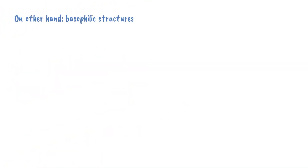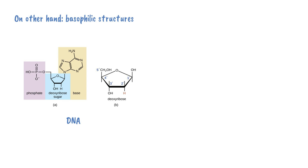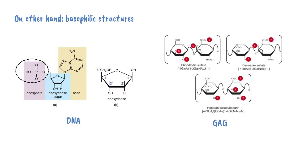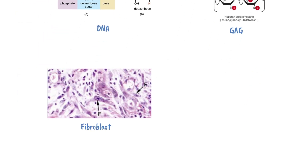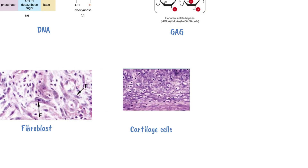On the other hand, acidic negatively charged structures include nucleic acids — DNA and RNA — because of their phosphate groups, which are negatively charged, making them acidic components. So they bind with basic dyes and are thus basophilic. Glycosaminoglycans, because of their sulfate groups, are also negatively charged and thus bind with basic dyes. An example is the cytoplasm of fibroblasts, chondroblasts, and osteoblasts, which is basophilic.